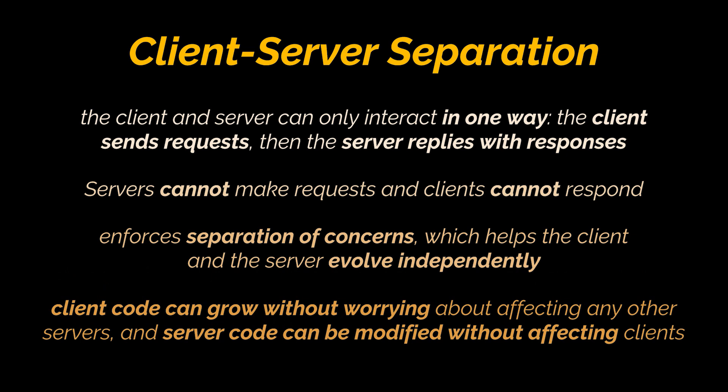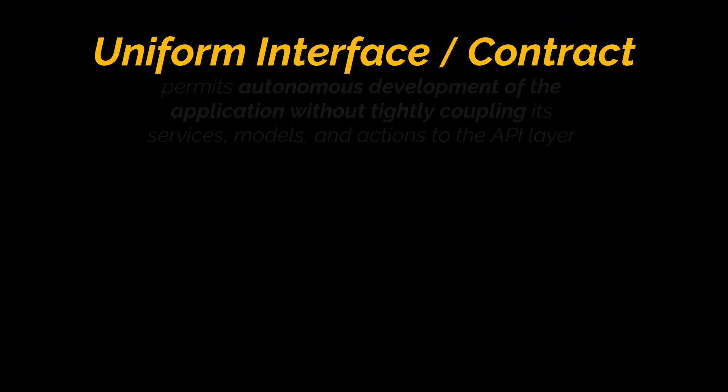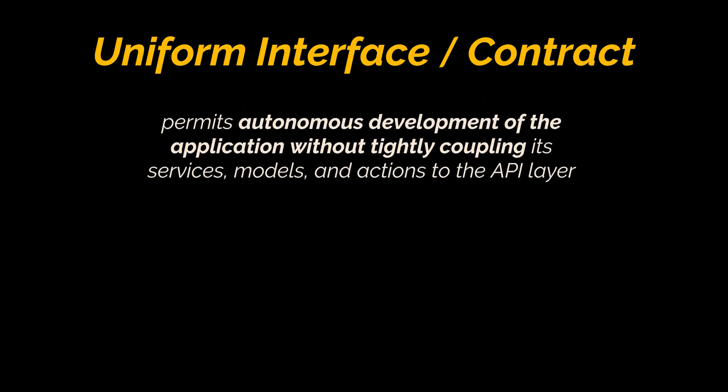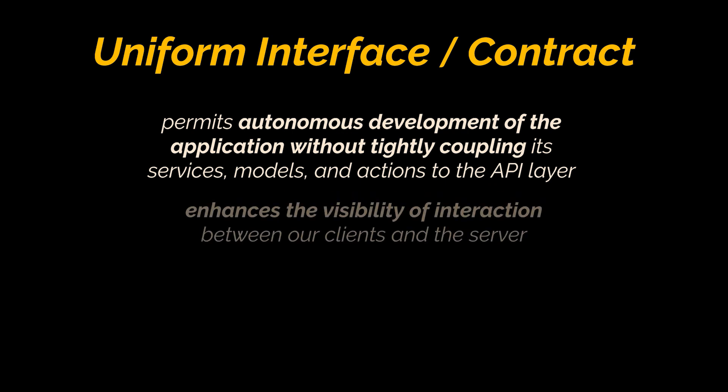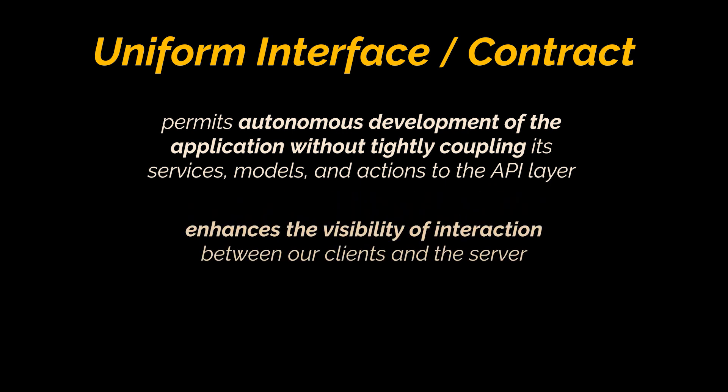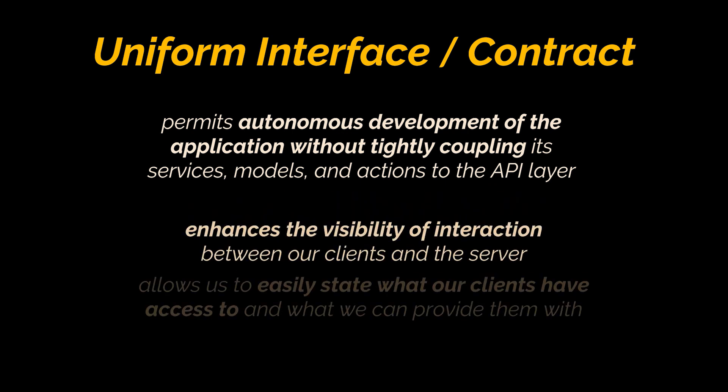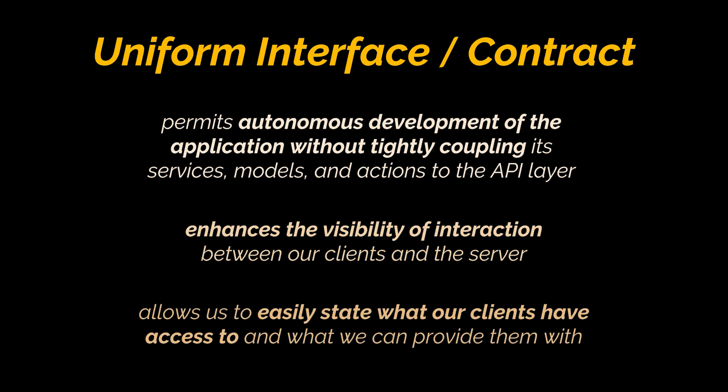Meaning client code can grow without worrying about affecting any other servers, and server code can be modified without affecting clients. The second principle is the Uniform Interface or contract. To decouple a client from the server, you need a unified interface that permits autonomous development of the application without tightly coupling its services, models, and actions to the API layer. This enhances the visibility of interaction between clients and the server, allowing us to easily state what our clients have access to.